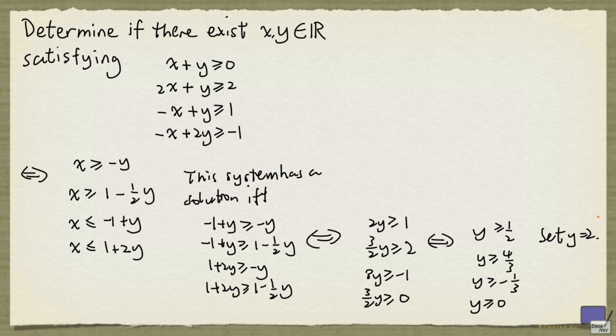There's a solution to this system. So if we plug the value 2 into y back into this system, we should be able to solve for a value for x. And that's what we'll do.